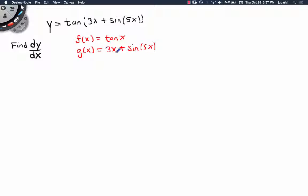Now the derivative of 3x is easy, that's just 3, but notice that this is not just the sine of x, this is the sine of 5x. So when I differentiate this I'm going to have to apply the chain rule again.